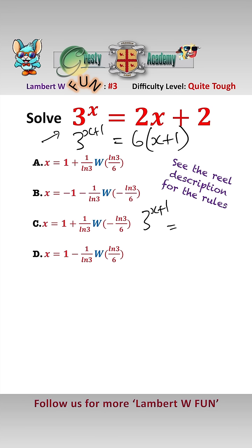Now 3 to the x plus 1 equals e to the x plus 1 log 3. So we can rewrite this as e to the x plus 1 log 3 equals 6x plus 1. Taking e over to the side,